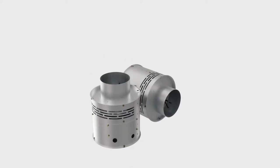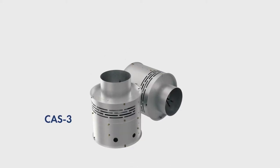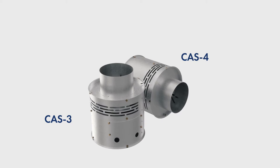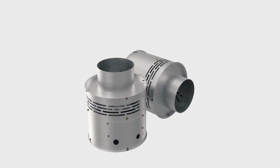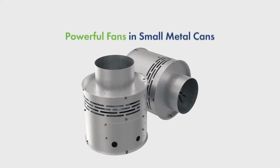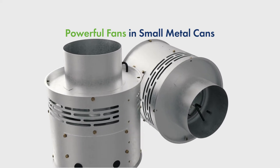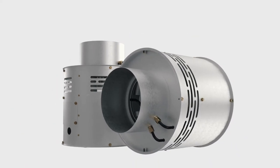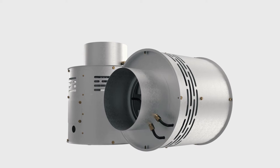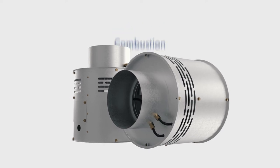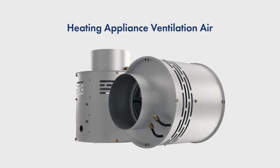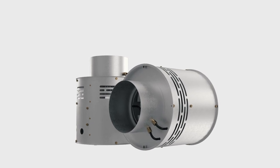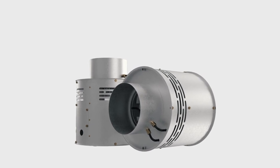The Field Controls CAS3 and CAS4 Fan in a Can Combustion Air Systems are as simple as they sound. They're powerful fans in small metal cans. Their function is simple as well. These small cans pack a punch, providing combustion, dilution, and heating appliance ventilation air when appliances are located in confined spaces.